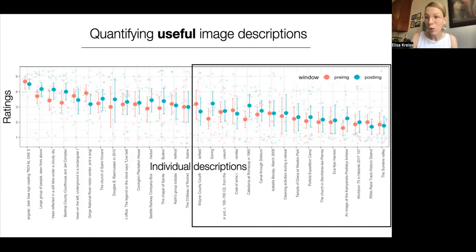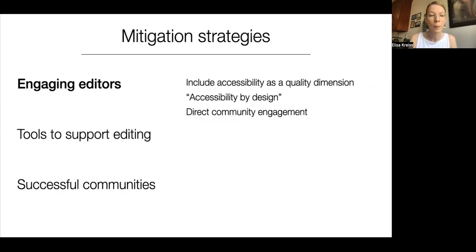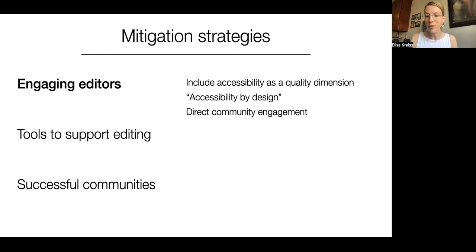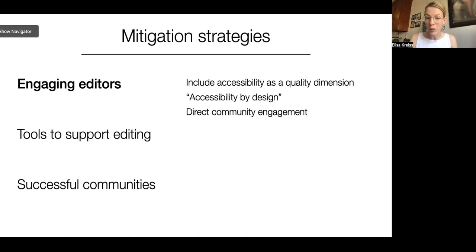Automatically detecting and flagging low quality descriptions will require sophisticated methods guided by empirical research. Going forward, it might be helpful to make image accessibility a quality dimension within Wikipedia. We estimate that more than 40% of English Wikipedia articles marked by the community as featured — that is, of best quality — have no alt texts for any of their images. Further, providing accessibility descriptions could become more central in editing tools, for example by requiring contributors to write alt text for every new image before saving content. Finally, direct community engagement can focus on content that needs urgent attention and connect contributors with blind and low vision people who can offer valuable feedback on their needs.